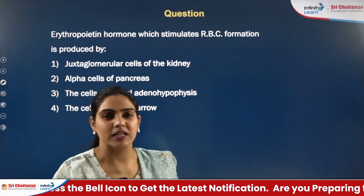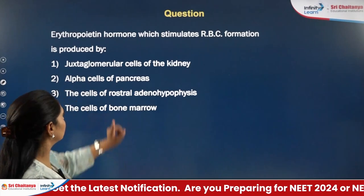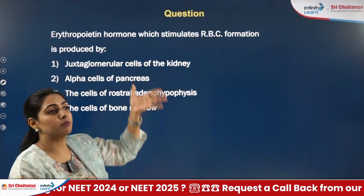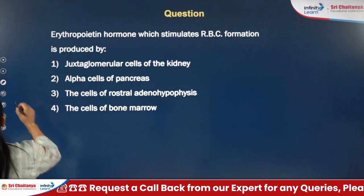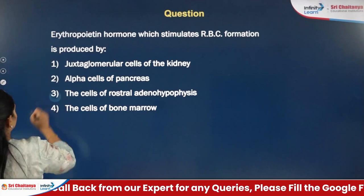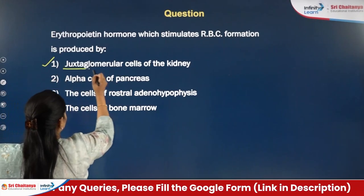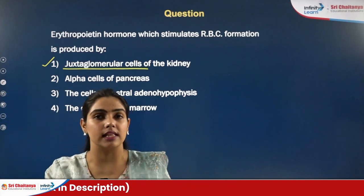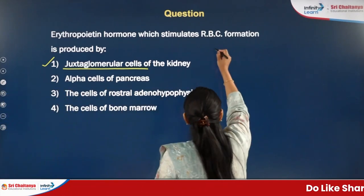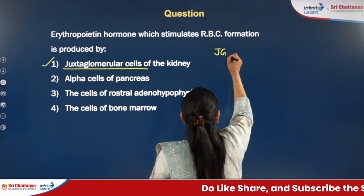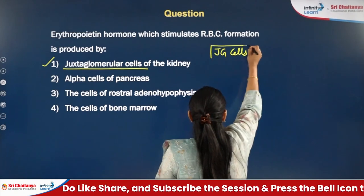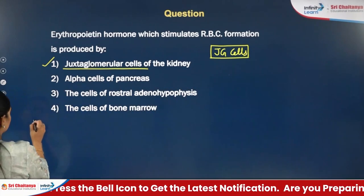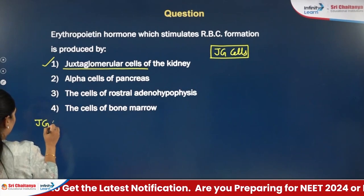The very first question: erythropoietin hormone, which stimulates RBC formation, is produced by which cells? The answer is the first option — juxtaglomerular cells of the kidney. Do you know what these juxtaglomerular cells are? In short, we can call them JG cells. These are part of one apparatus known as the juxtaglomerular apparatus.